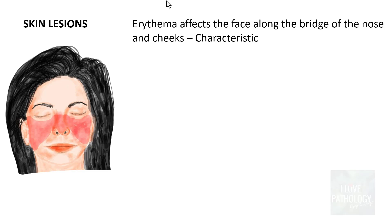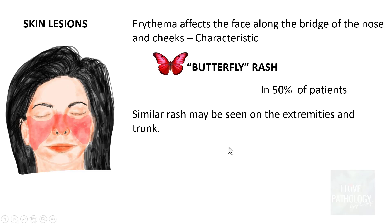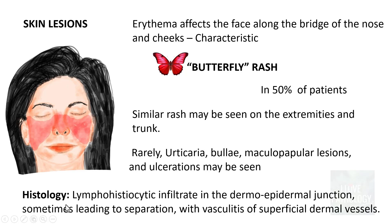Moving on to skin lesions: the characteristic feature is erythema affecting the face along the bridge of the nose and cheeks, resembling a butterfly — referred to as the butterfly rash, seen in around 50% of patients. Similar rashes may appear on the extremities and trunk. Rarely, lesions manifest as urticaria, bullae, maculopapular lesions, or ulcerations. Histological examination shows lymphohistiocytic infiltrate at the dermoepidermal junction, which can lead to separation of the junction. Vasculitis of superficial dermal vessels may also be seen.